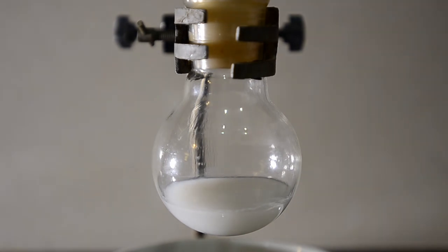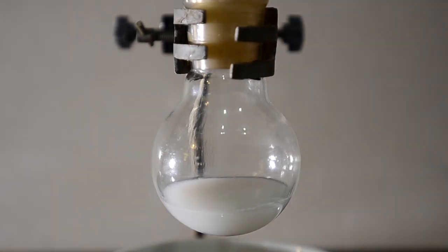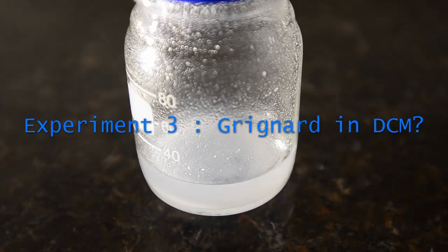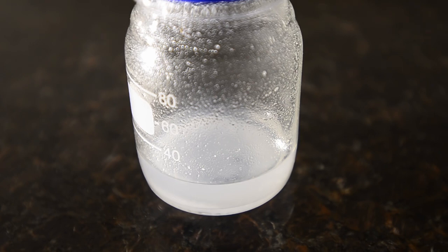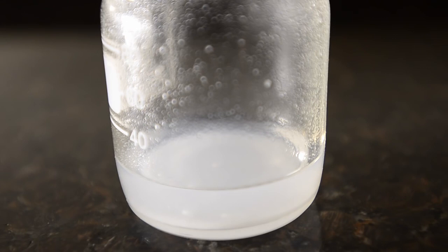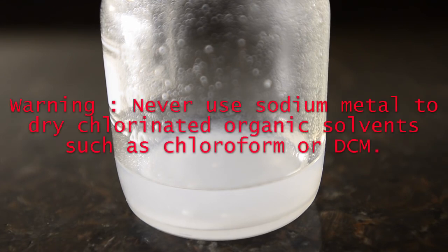We then did a third experiment. We wanted to see if it was possible to use a different solvent than ether. So we took some dichloromethane and dried it in a bottle using a small amount of phosphorous pentoxide. Do note that you cannot dry chlorinated solvents using sodium metal. This is extremely dangerous and can cause an unpredictable explosion.